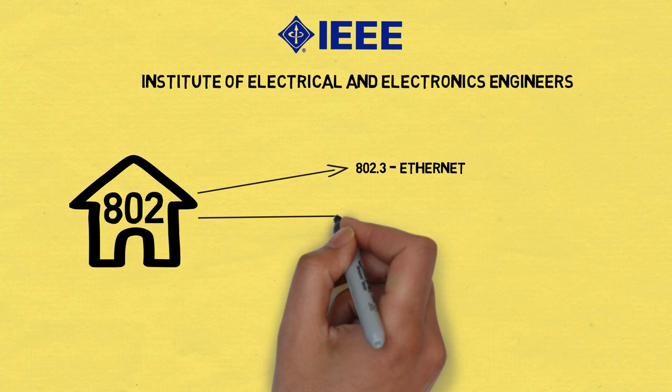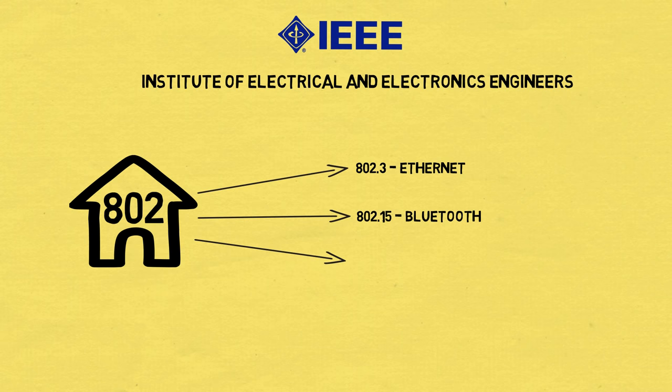802.3 defines Ethernet, 802.15 defines Bluetooth, and 802.11 defines the Wi-Fi networking standards.